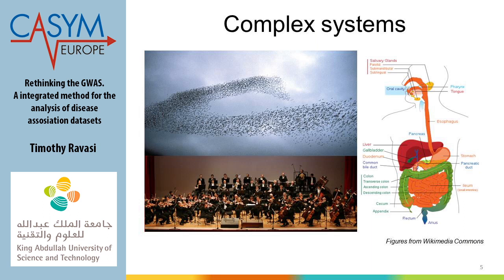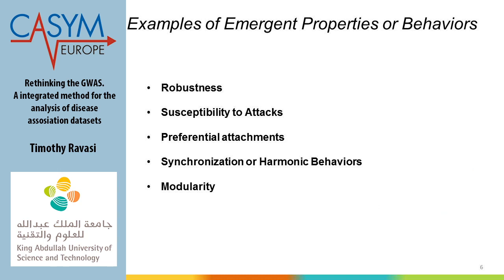So what is a complex system? A complex system is named complex when it is formed by heterogeneous components — different types of components — that when they come together and interact, generate properties that are not visible when you study the single component. These are called emerging properties, like the flocking of birds, the symphony coming from different instruments, or of course the human body.